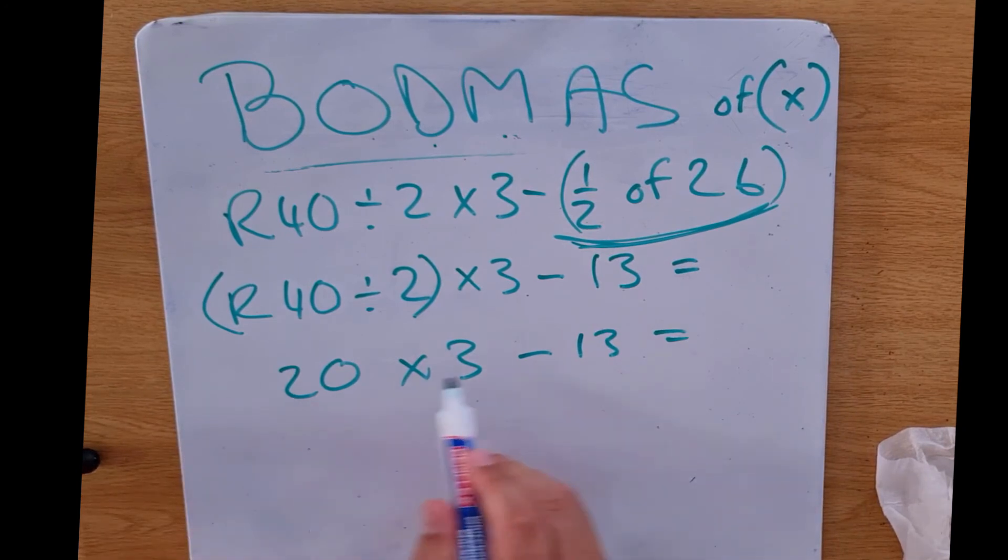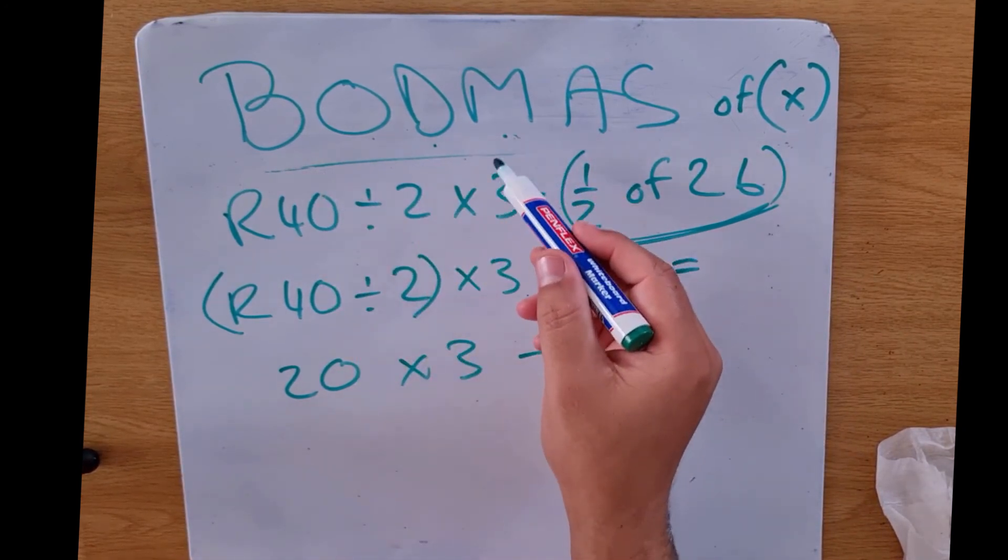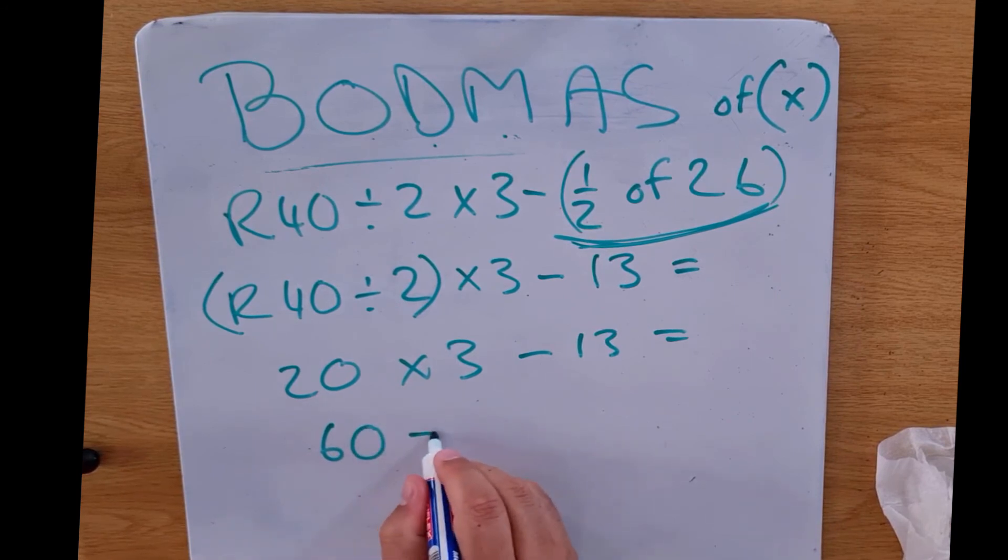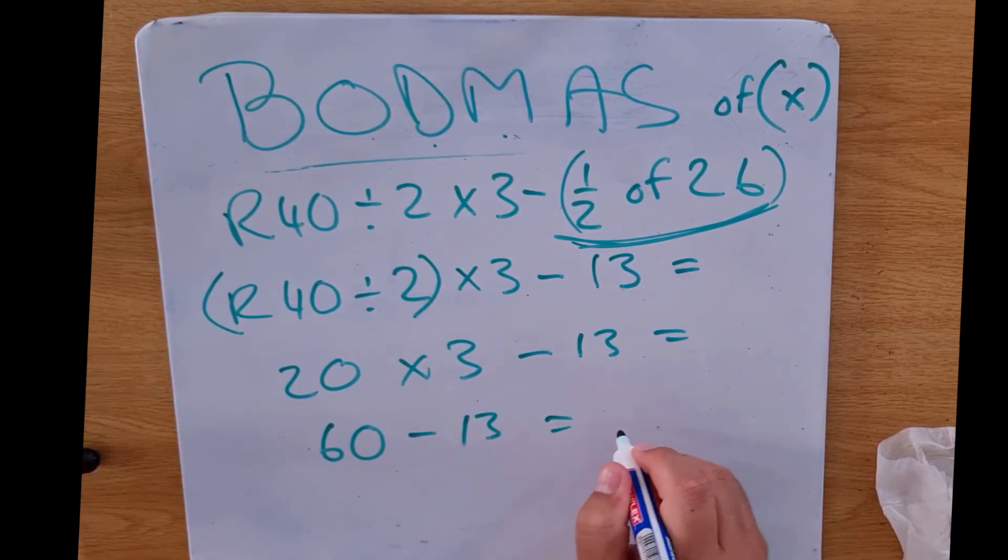And again from left to right, what's the first one there? Multiplication. So it is 60 minus 13, and that'll give us 47.